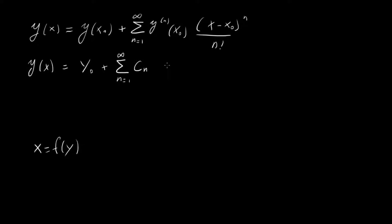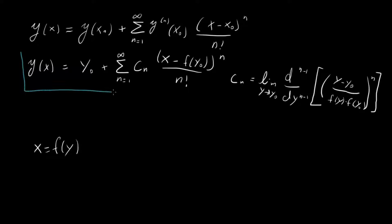Times x minus f of y naught over n factorial, this guy up to the n. And this cn is given by, and it's a little complicated, limit y going to y naught, d to the n minus 1 by dy to the n minus 1 of y minus y naught divided by f of y minus f of y naught, this whole thing raised to the n, close bracket. Alright, so this is it, this is our Lagrange inversion theorem.